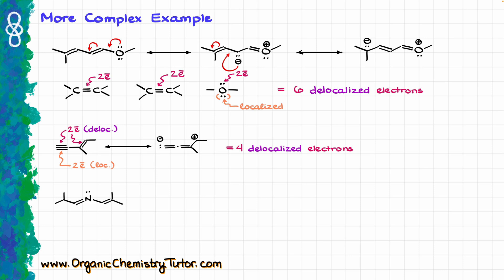The other tricky part is when you have a heteroatom like nitrogen or oxygen that already has a pi bond. In cases like that — with a few exceptions from the general rule — the lone pair electrons on that heteroatom are going to be localized. So in this case, the delocalized electrons are only the electrons of the pi bonds, giving us four delocalized electrons overall.